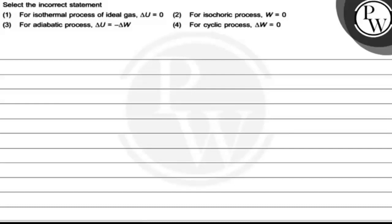Hello, let's hit the question. The question says select the incorrect statement. First: for isothermal process of ideal gas, delta U is equals to zero. Second: for isochoric process, W is equals to zero. Third: for adiabatic process, delta U is equals to minus delta W. And for cyclic process, delta W is equals to zero.